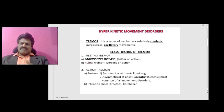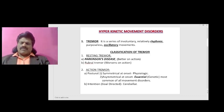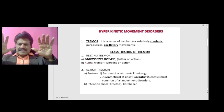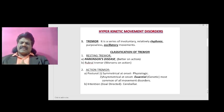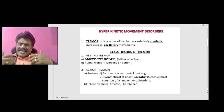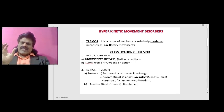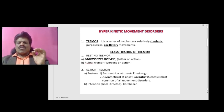Under action tremor we have postural tremor — a tremor present during a sustained posture — and intentional tremor, which is goal-directed and classically seen in cerebellar disorders. If postural tremor is symmetric at onset, it is physiologic. If it is asymmetric at onset, we think of essential tremor, which is genetic and is the most common of all movement disorders.